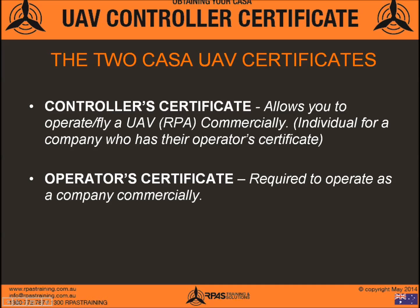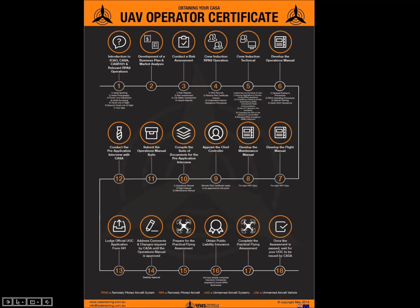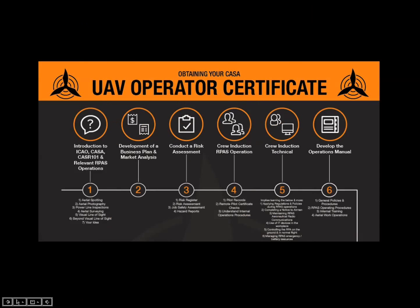At RPAS Training we've developed a simple step-by-step graphical schematic for both the operator's and controller's certificates. Looking at the operator's certificate schematic, there are about 18 steps that a company needs to complete. A few key things: you need to develop a business plan and market analysis, conduct risk assessments for the jobs you'll be doing, and mainly develop an operations manual — a large part of the process. That includes general policies and procedures and RPAS operating procedures.